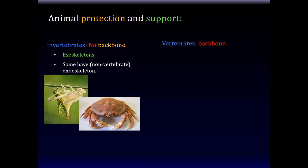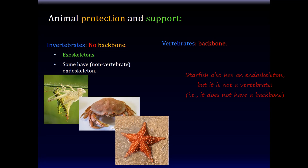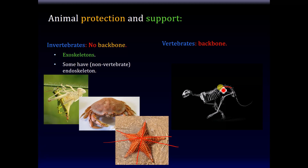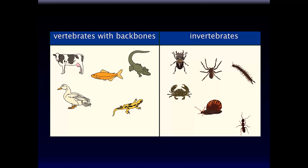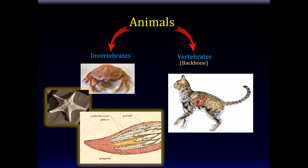Some invertebrates can have an endoskeleton — their skeleton is inside. For example, the starfish has an endoskeleton but no backbone. Vertebrates, on the other hand, are defined by having a backbone. Among vertebrates there are great varieties: a cow, a fish, an alligator, a duck — these are all vertebrates. Invertebrates, such as the critters on the right, have no backbones at all. We shall first study the invertebrates, and after we are done with those, we shall go on to the vertebrates.